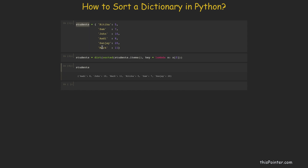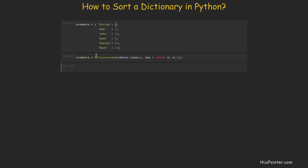If we print this dictionary, its contents will be sorted by key. If we want to sort the dictionary by value, that is also simple. We use the same kind of lambda function which accepts a key-value pair and returns the second element of the tuple — the value field. Since it returns the value field for each pair, each pair will be compared based on the value. Running this line, the dictionary contents are sorted by value: 5, 7, 8, 10, 11, 20.